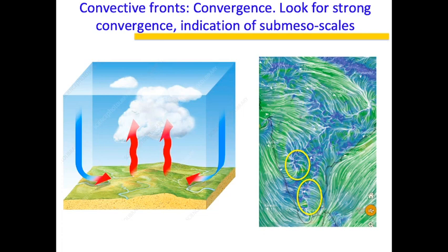Unless we go to resolutions less than 10 kilometers in global models, we won't be able to resolve these submesoscale processes — until that time we will have to live with this kind of uncertainty. But one thing we can do is interpolate based on the process and say that a submesoscale component may be coming into picture.